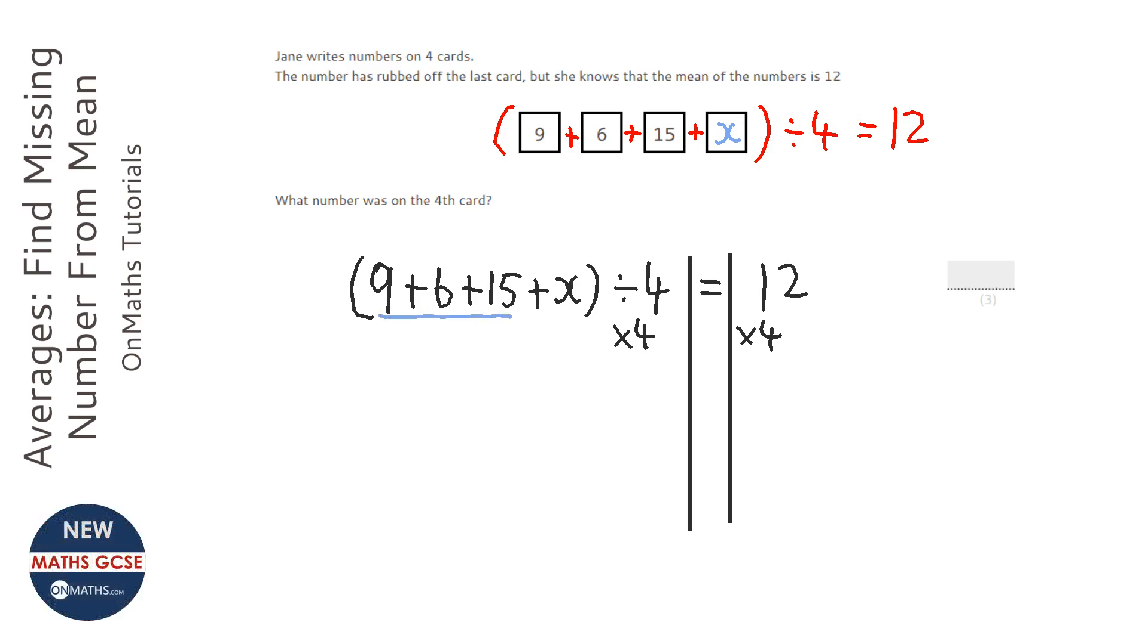So 15 plus 6 is 21, 21 plus 9 is 30. So 30 plus x, and we've got rid of the divide by 4 because we've timesed it by 4, equals, and then 12 times 4, which is 48.